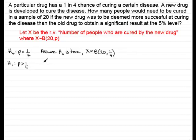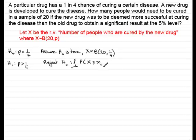Normally we would reject H0 if the probability that the number of people cured is greater than or equal to some critical value XC is less than or equal to the significance level of 5%, i.e. less than or equal to 0.05.